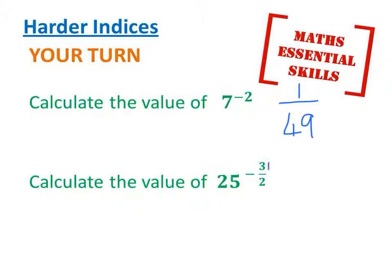The bottom answer: we've got the power and the root, and then to consider the negative. So the square root of 25 is 5. I can now write it as 5 to the power 3. 5 times 5 times 5 is 125, and the negative means 1 over, so 1 over 125. Well done if you got that right.